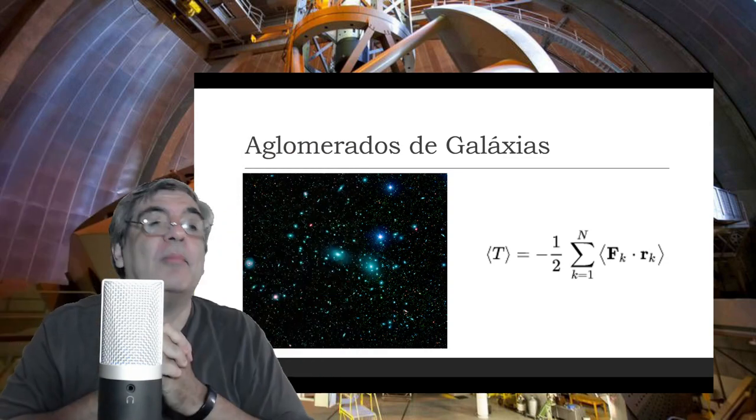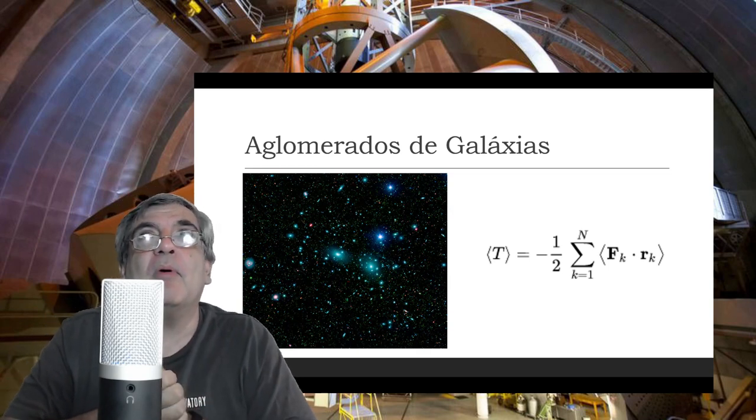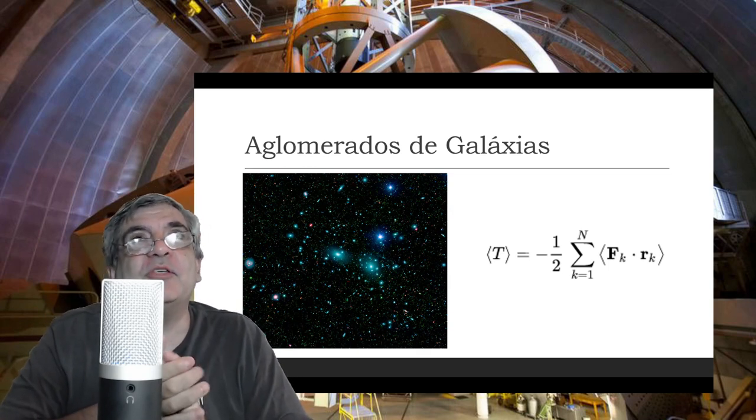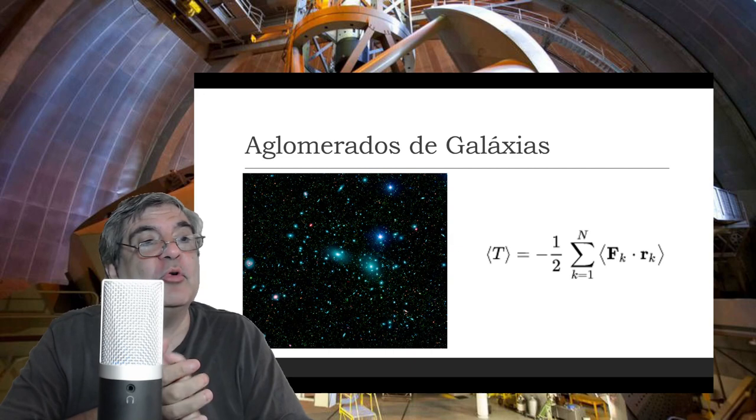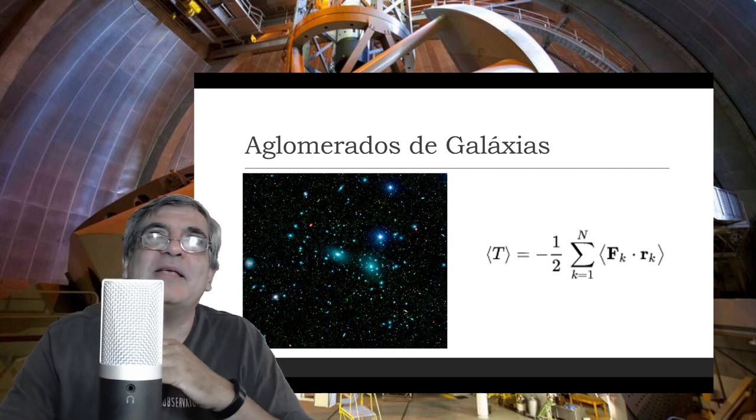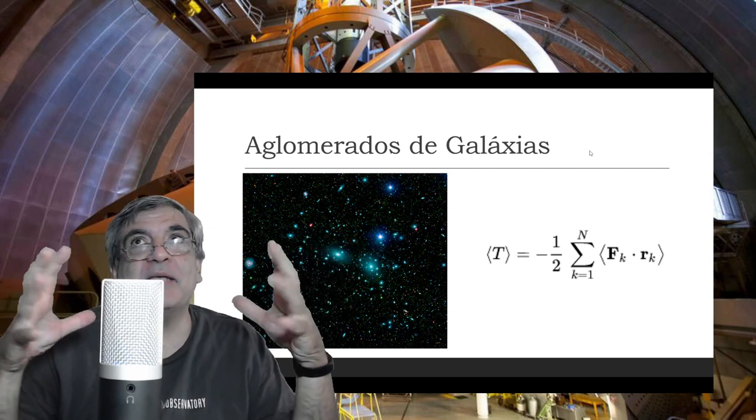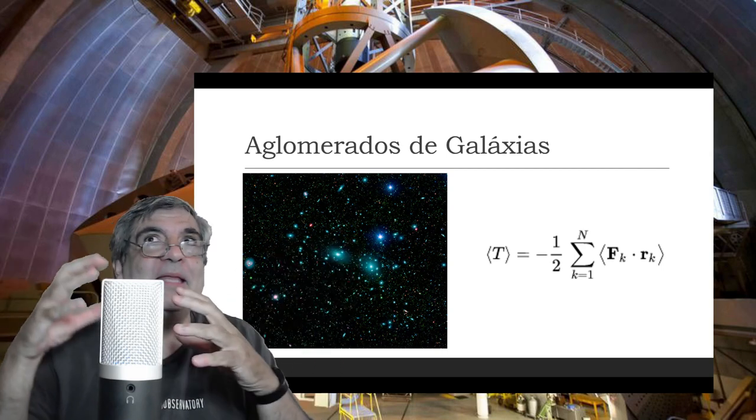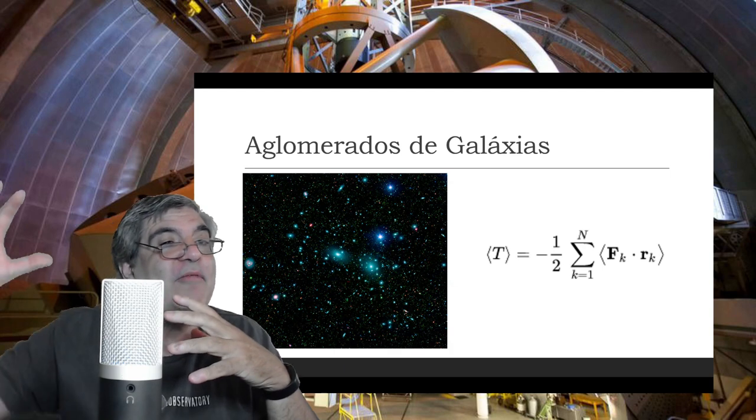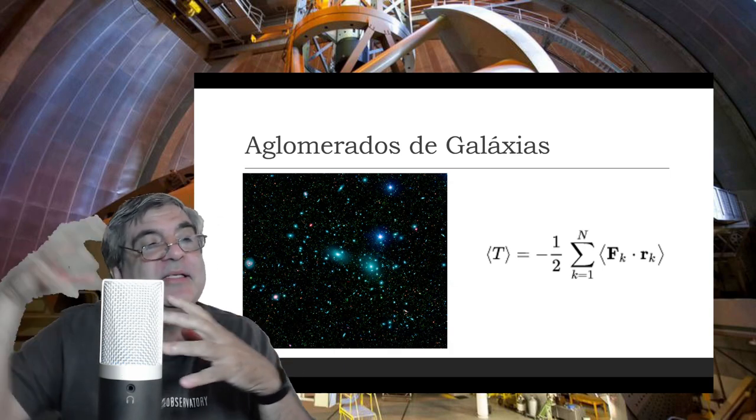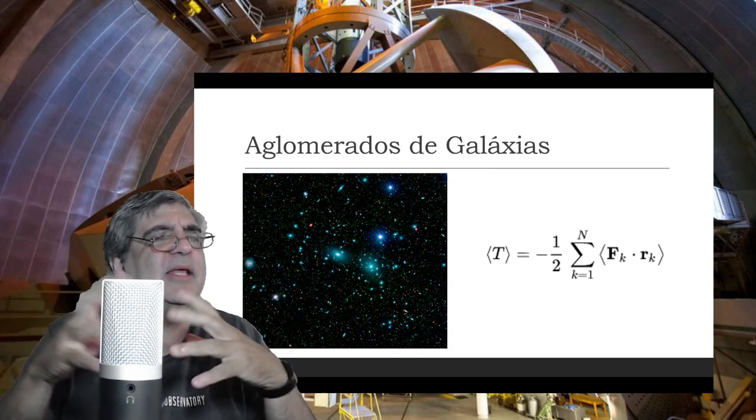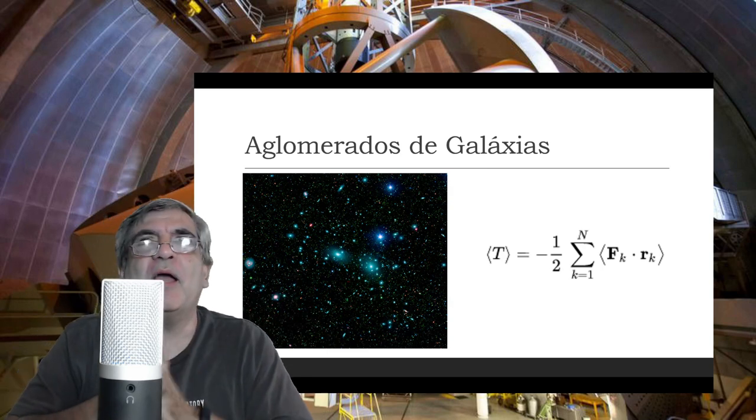Ele, observando o aglomerado de galáxias na constelação de Coma-Berenice, fez, utilizando um teorema muito famoso da física, chamado Teorema do Virial. E essa fórmula aqui mais ou menos diz o seguinte: que a energia total potencial do sistema, ela tem uma equivalência com uma variação média da energia cinética. Se vocês quiserem entender isso melhor, procura Teorema do Virial.